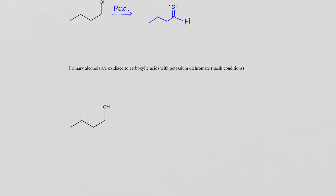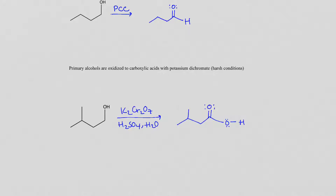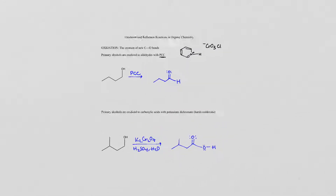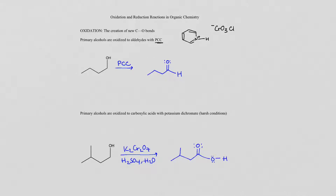Primary alcohols can also be oxidized under harsh conditions with potassium dichromate, sulfuric acid, and water — K₂Cr₂O₇ and aqueous H₂SO₄. That is going to give us a carboxylic acid. We started with one carbon-oxygen bond, and now we have three. So those harsh conditions cause a further oxidation, with that carbon going into one higher oxidation state than with PCC.